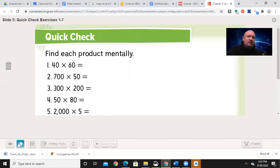Welcome back. Let's see how we did on our quick check. 6 times 4 is 24, there are two zeros, 2,400.